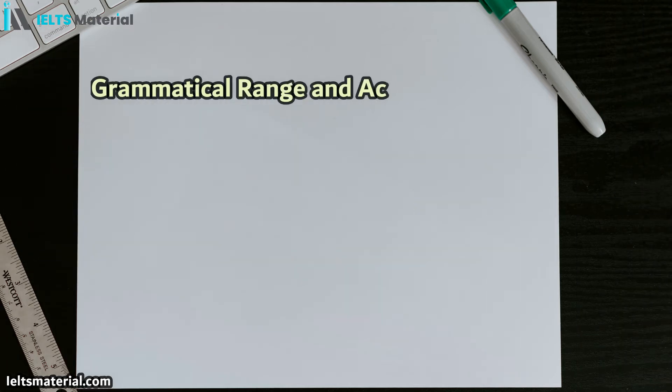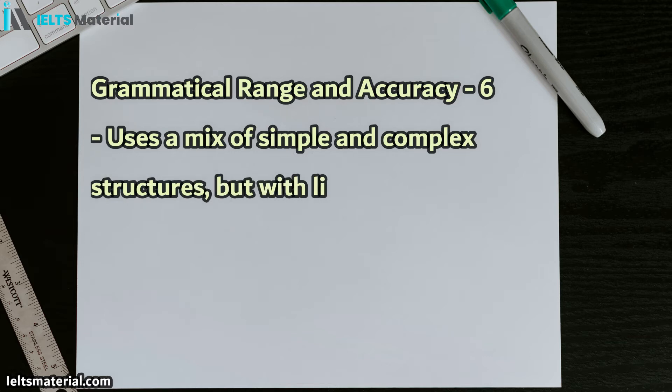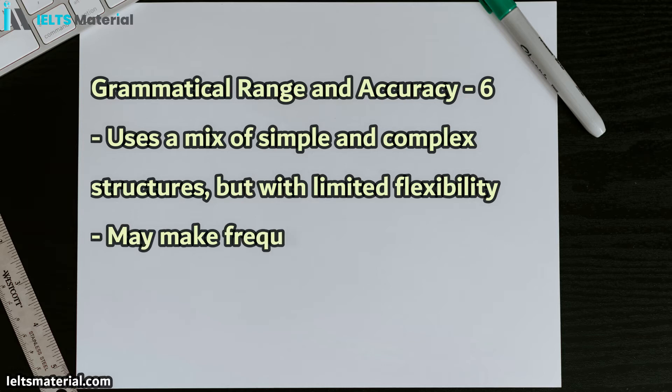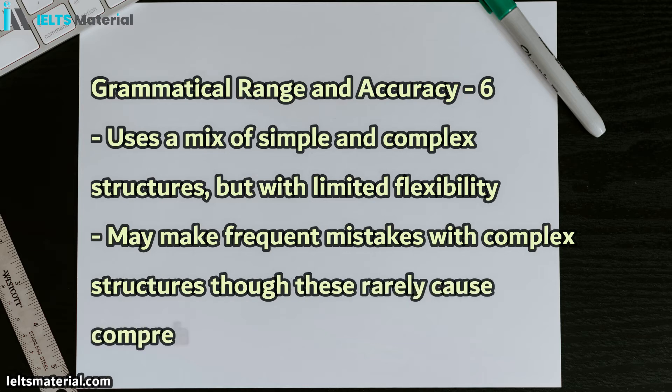Next, we have grammatical range and accuracy, and again, this is what you see at a band 6. You need to use a mix of simple and complex structures, but with limited flexibility. So, you do have to try to use a range of different grammar to get up to 6, but you don't have to be perfect. As you can see, you may make frequent mistakes with complex structures, but they don't interrupt comprehension. So basically, someone can understand what you're saying.